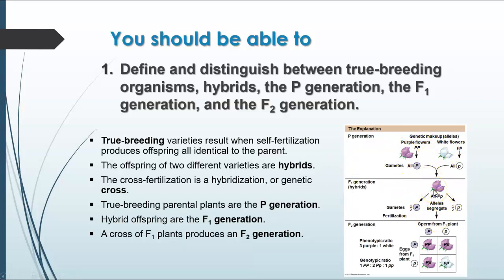Those are the hybrids. When the hybrids are allowed to self-pollinate, they produce the F2 generation, and that's where you'll end up with the phenotype ratio — the three to one ratio of the dominant phenotype to the recessive phenotype. The genotype ratio would be one to two to one for the homozygous dominant, heterozygous, and homozygous recessive, if it's a true monohybrid cross where both parents are heterozygous for the trait you're looking at.